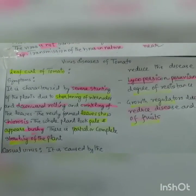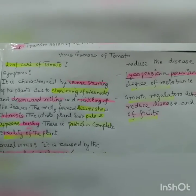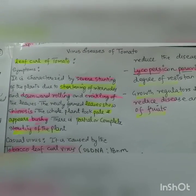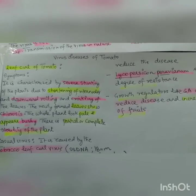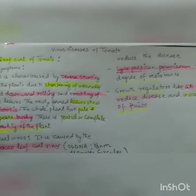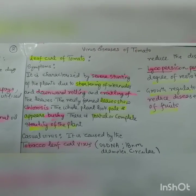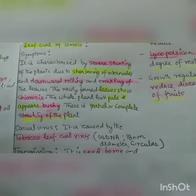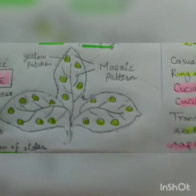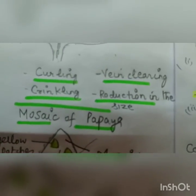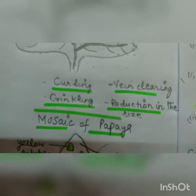Now we are coming to the last virus disease — virus disease of tomato — specifically leaf curl of tomato. The symptom is characterized by severe stunting of plants due to shortening of internodes. Also there is downward rolling and crinkling of leaves — every time there is downward rolling, there is a crinkling sound. The symptoms include curling, vein clearing, and crinkling with reduction in size.